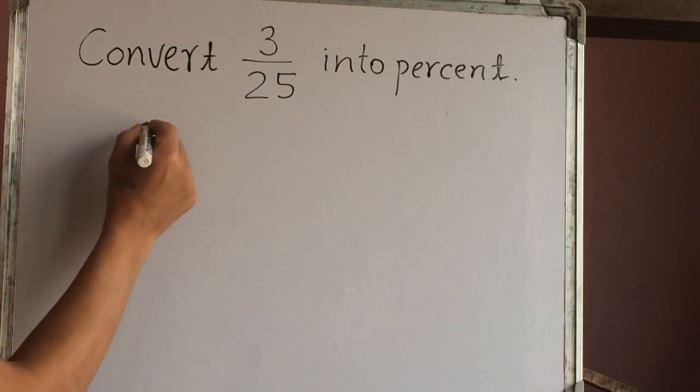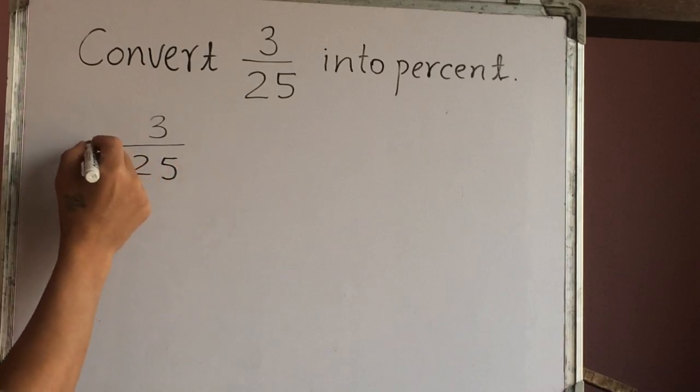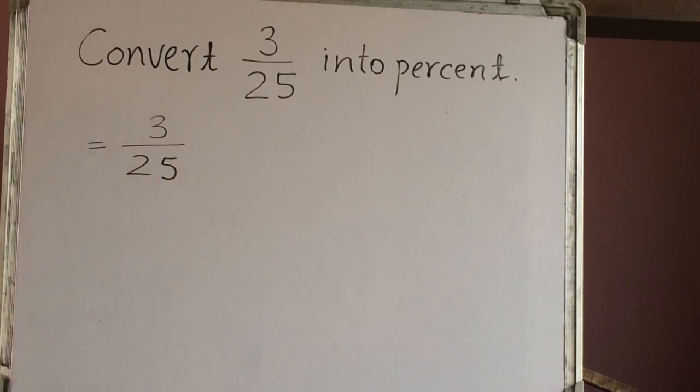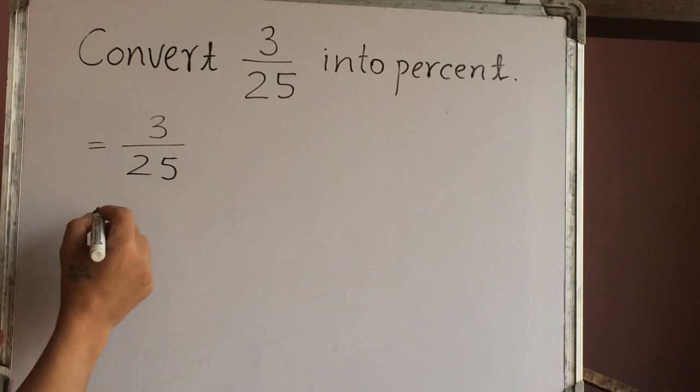Here we have 3 out of 25 fraction number. Percent is what? Percent means out of 100. So here we have 2 methods.